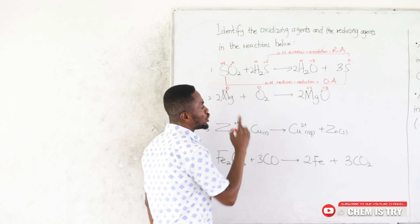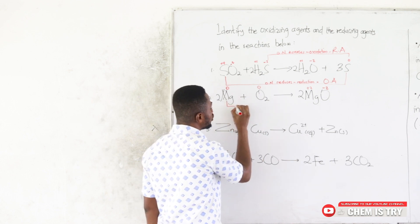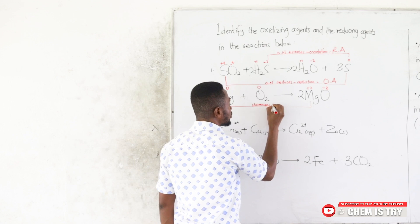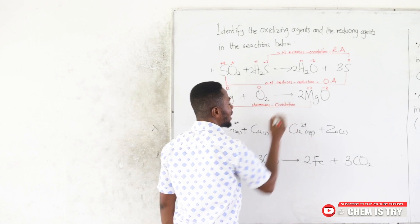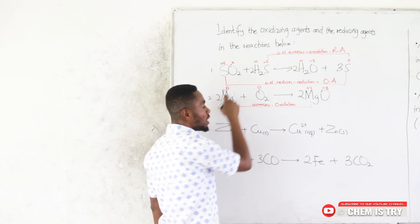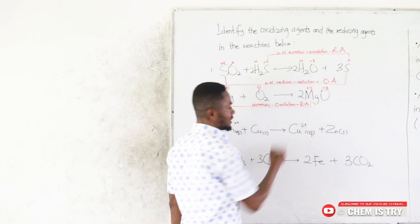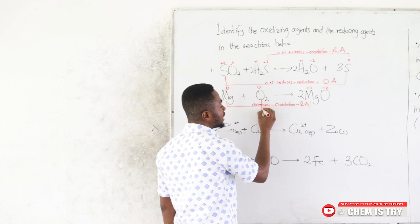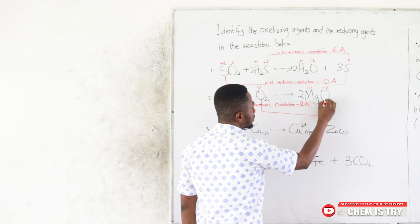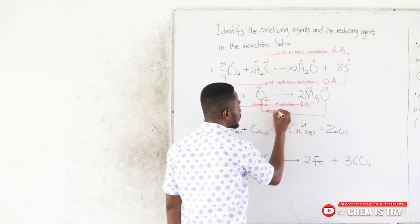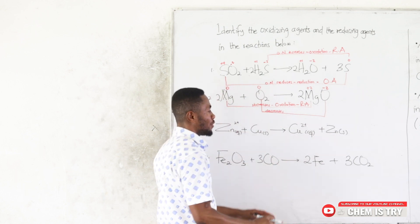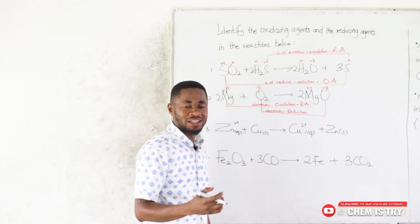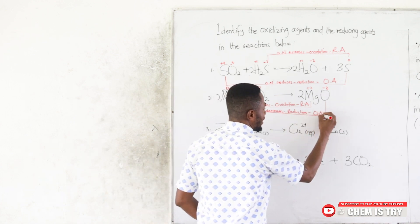The oxidation number of magnesium increases from 0 to +2, so it is undergoing oxidation. Magnesium is therefore the reducing agent. Oxygen's oxidation number decreases from 0 to −2, which is reduction. The substance undergoing reduction is the oxidizing agent, so O₂ is the oxidizing agent here.